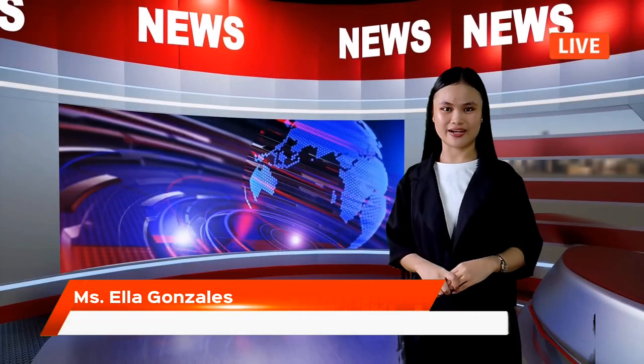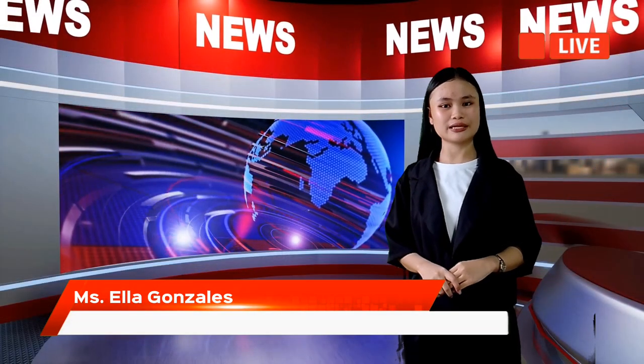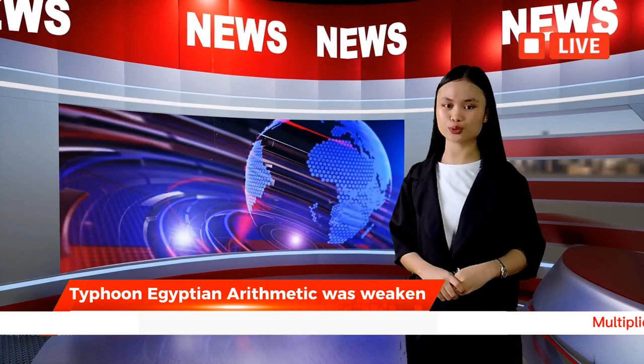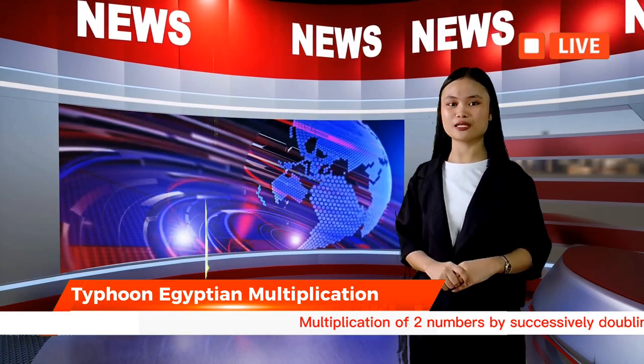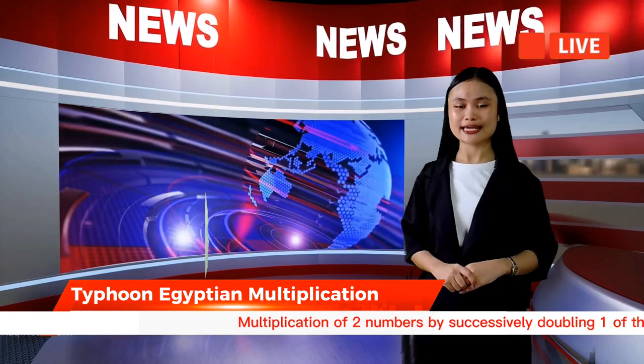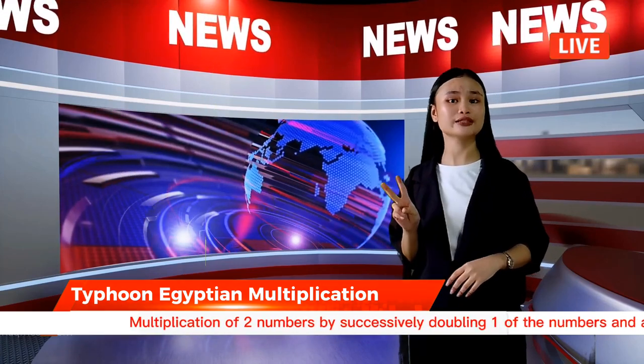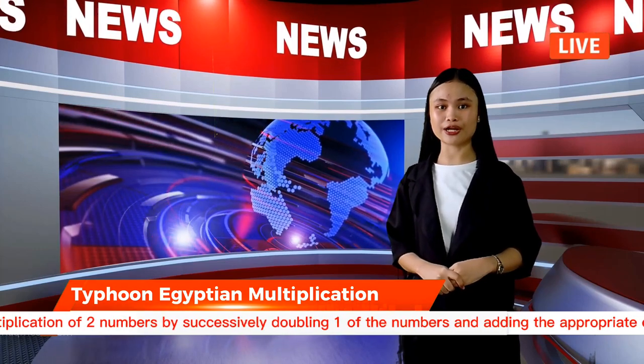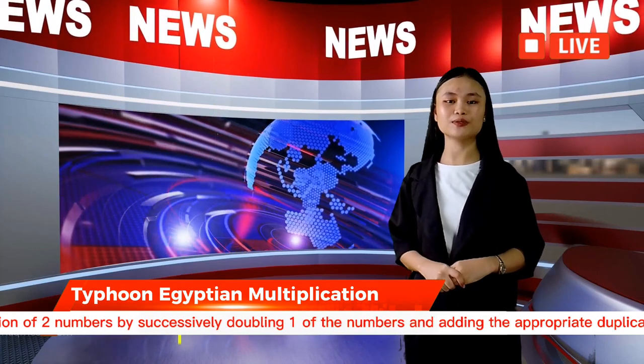Thank you, Ms. Yere. Though it may sound like trouble because of the merging of two typhoons — Typhoon Egyptian Multiplication and Typhoon Egyptian Division — the level of destruction is divided into two, making it quick. Typhoon Egyptian Multiplication is the multiplication of two numbers by successively doubling one of the numbers and adding the appropriate duplication to form the product.